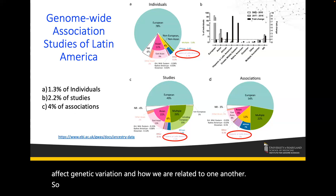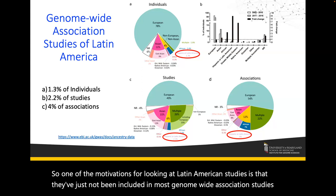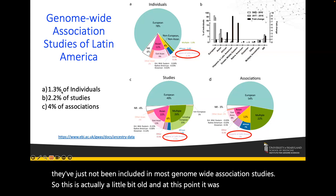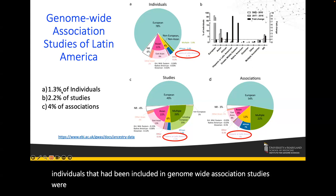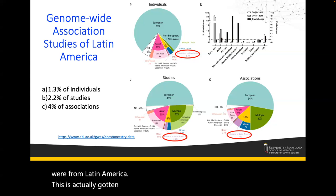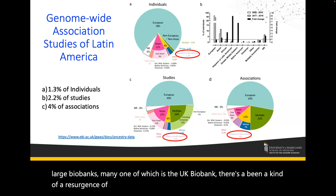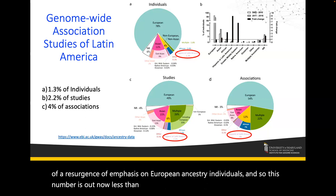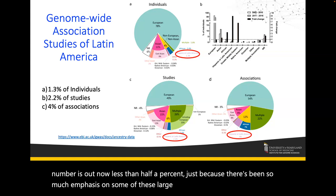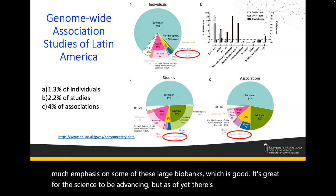One motivation for looking at Latin American studies is that they've just not been included in most genome-wide association studies. At one point it was about 1.3% of all individuals included in GWAS were from Latin America. This has actually gotten worse, because with the advent of large biobanks — like the UK Biobank — there's been a resurgence of emphasis on European ancestry individuals. That number is now less than half a percent. It's great for the science, but as of yet there's no biobank within Latin America.